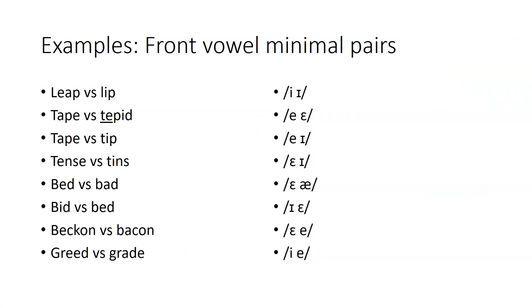Minimal pairs involving front vowels may help in your ability to identify them. A minimal pair is a word where there is only one sound difference between the two words you're comparing. So in leap versus lip, we have E versus I; tape versus the first syllable in tepid gives A versus E; tape versus tip for A versus I; tense versus tins for E versus I; bed versus bad for E versus A; bid versus bed for I versus E; beckon versus bacon for E versus A; greed versus grade for E versus A.